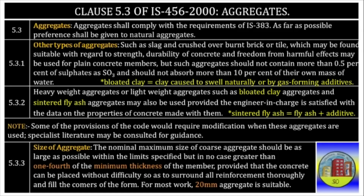5.3.3 Size of Aggregate: The nominal maximum size of coarse aggregate should be as large as possible within the limits specified, but in no case greater than one-fourth of the minimum thickness of the member, provided that the concrete can be placed without difficulty so as to surround all reinforcement thoroughly and fill the corners of the formwork. 20 mm aggregate is generally suitable.